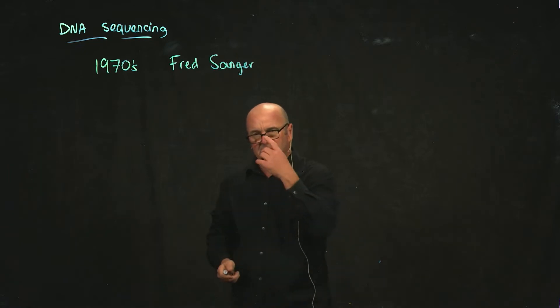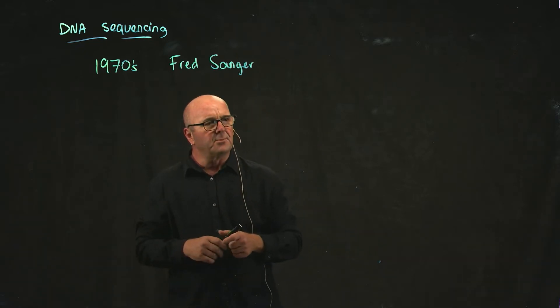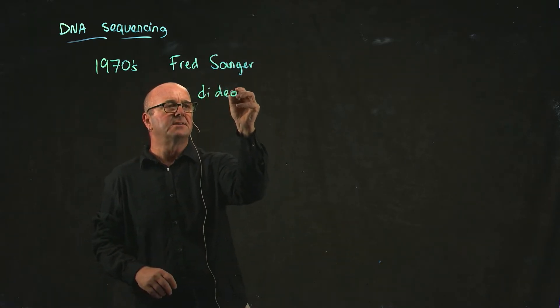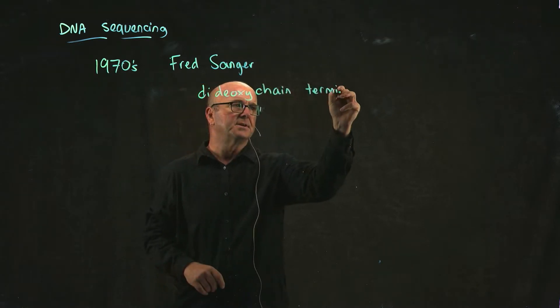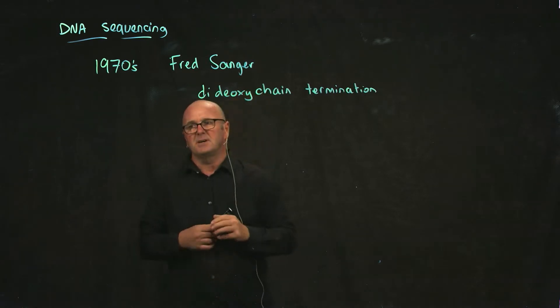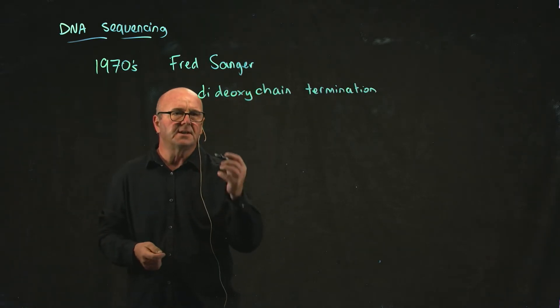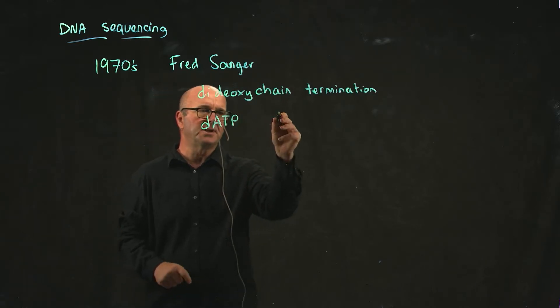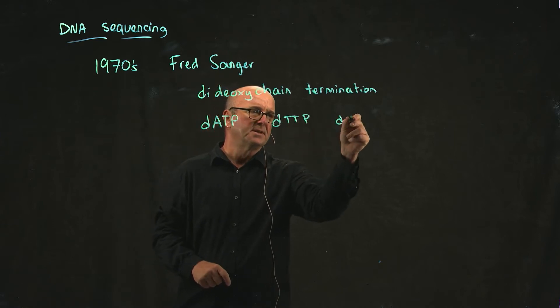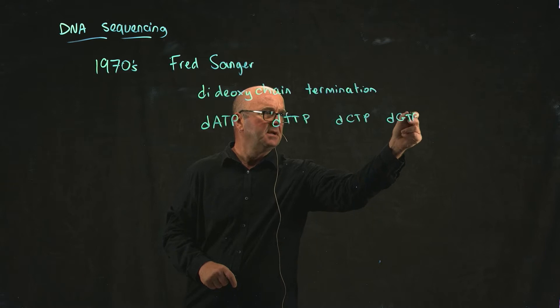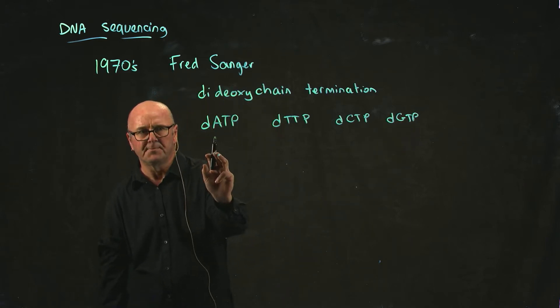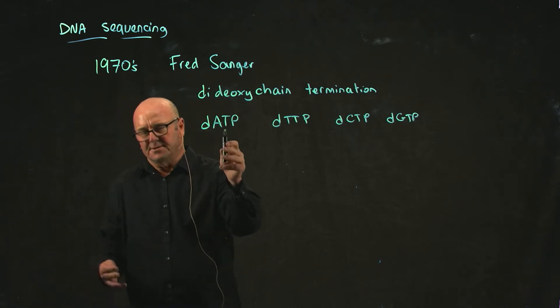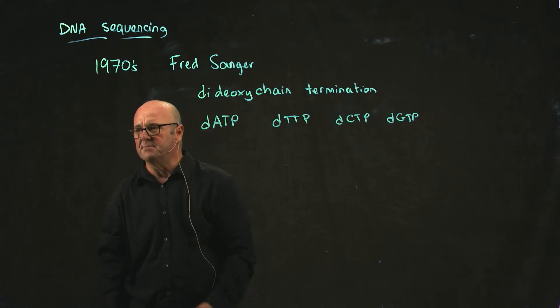Fred Sanger invented a way of doing DNA sequencing which is called dideoxy chain termination. The basis behind dideoxy chain termination is that in normal DNA you have nucleotides - dATP, dTTP, dCTP, and dGTP. These are deoxynucleotides. The role of them is to create DNA.